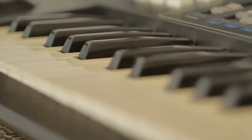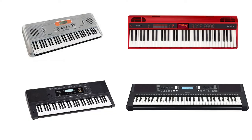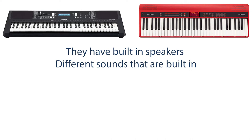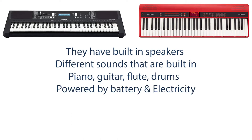To understand keyboards better, let's categorize them into different categories and go over the differences. Keyboards are common electronic music instruments used as all-in-one instruments. They have built-in speakers and musicians are able to play hundreds of different sounds built into them. These sounds are mainly samples of other instruments such as piano, guitar, flute, drums and more. Most keyboards can also be powered by batteries, and an added feature is the ability to play backing tracks and lessons, making them a great first instrument to learn.